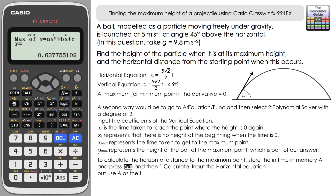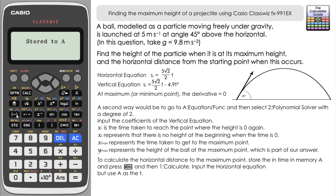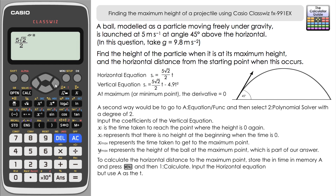To find the horizontal distance using Method 2, take the time from the max x result and store it in memory A. Then go to Menu and 1 for calculate mode. Input the horizontal equation: 5√2/2 times Alpha A. Press equals, then SD, and we again get a horizontal distance of 1.28 metres.